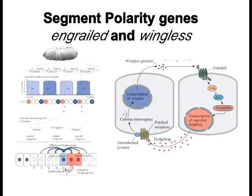At high levels of even-skipped or fushi tarazu, you get expression of engrailed (the Drosophila homolog of sonic hedgehog). The cells producing engrailed have a frizzled receptor that the Wnt/wingless protein binds to. This is reciprocal induction: the engrailed cell makes sonic hedgehog that turns on the Wnt protein in adjacent cells, and Wnt in turn through the Wnt signal transduction pathway turns on sonic hedgehog. All this does is maintain Wnt and sonic hedgehog signaling in adjacent cells, which is one of the biggest things driving gastrulation movements creating segments in Drosophila.